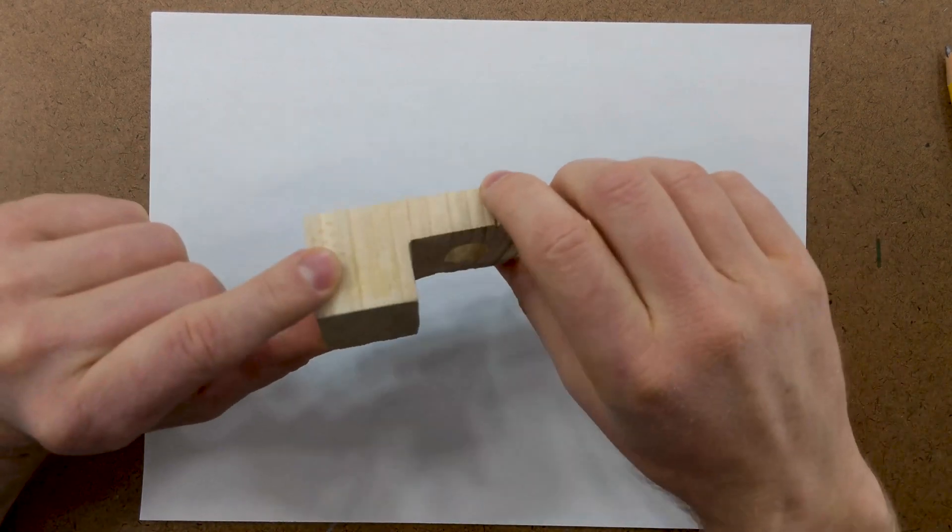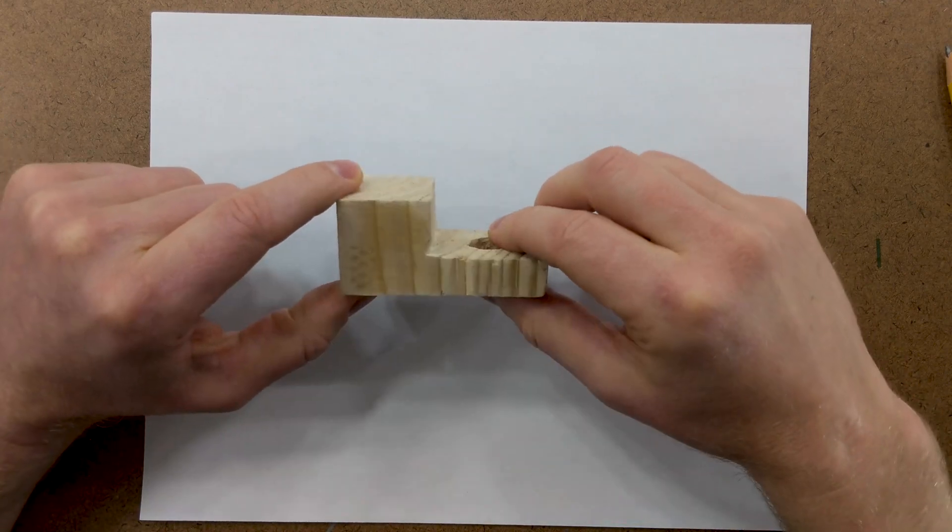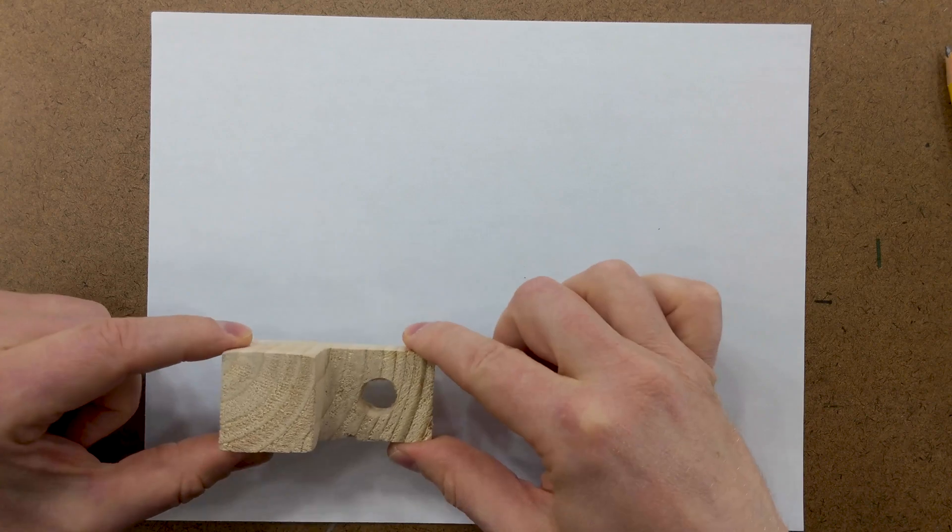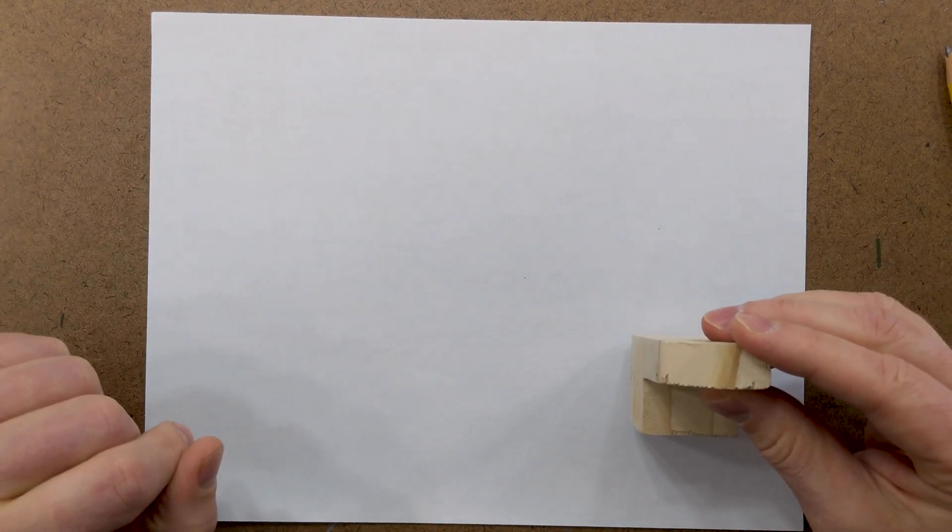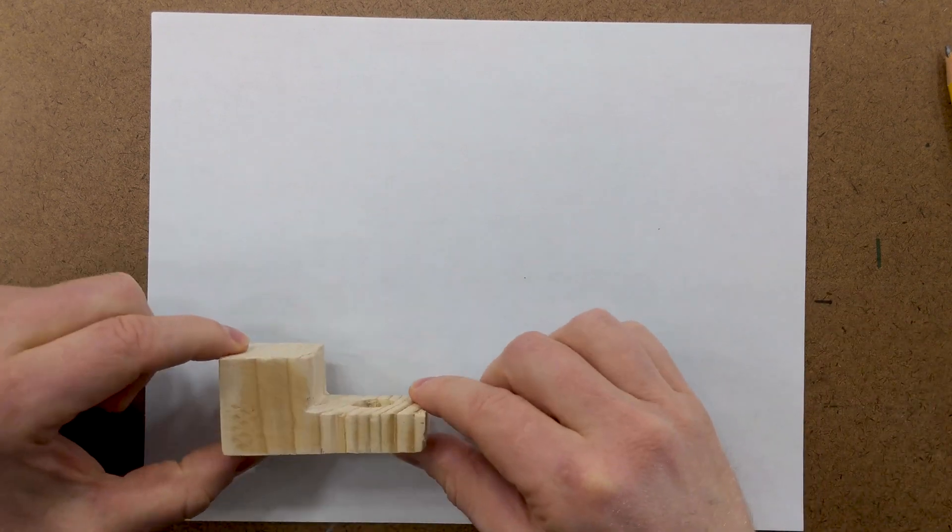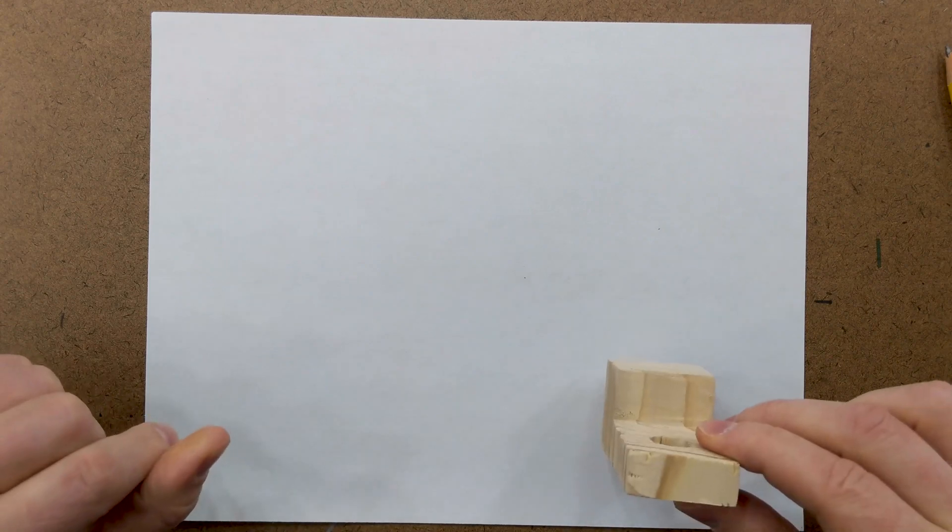When you're confronted with an object, you have to make a decision of what's going to be the front, top, and right hand side of the object. I could have this be the front of the object, then this would be the top, and this would be the right hand side. Or I could have this be the front of the object, this be the top, and then this be the right hand side.